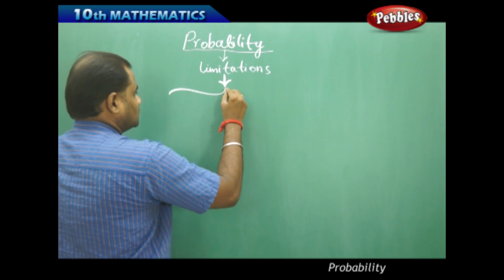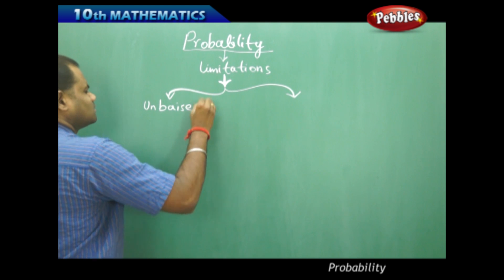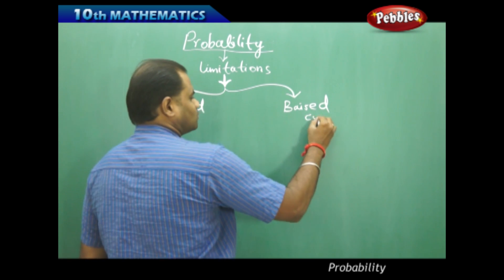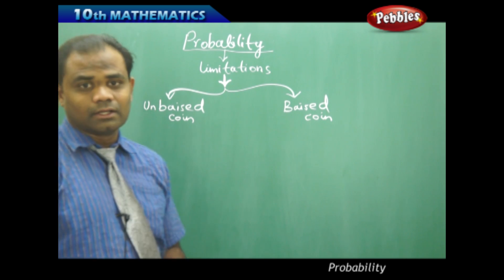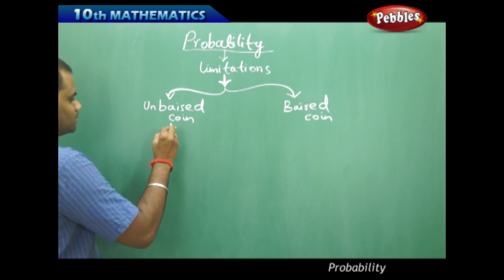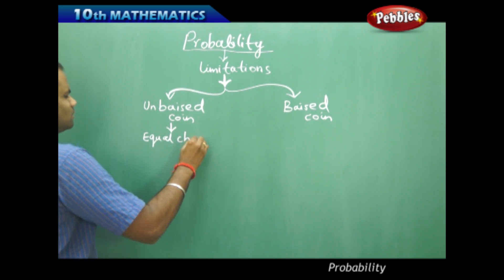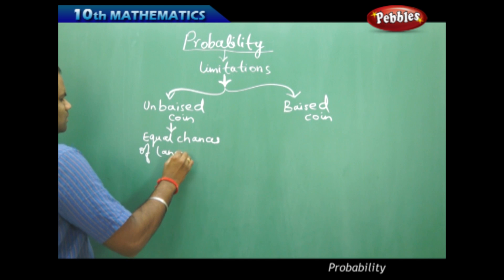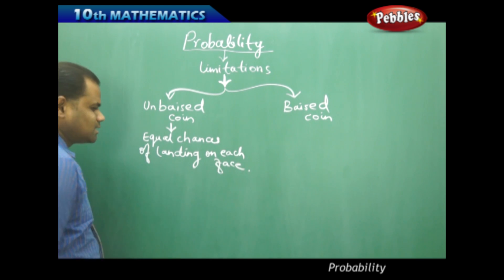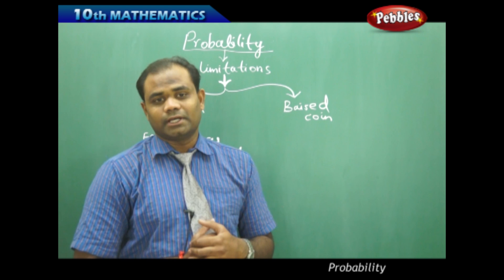To start with, let me differentiate between unbiased and biased, referring to the coin, dice, or any other object taken in the event of a probability problem. An unbiased coin or an unbiased dice is one in which each face has equal chances of landing.